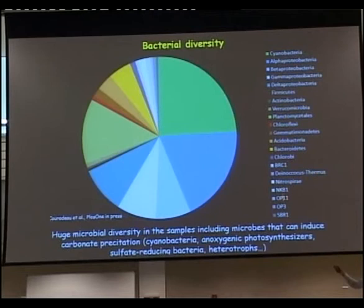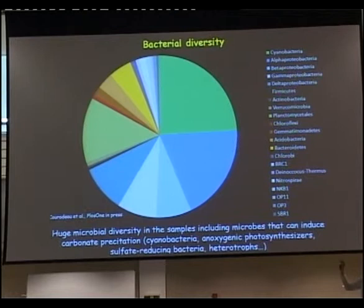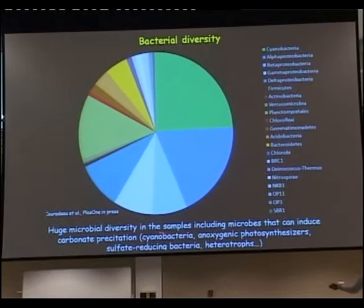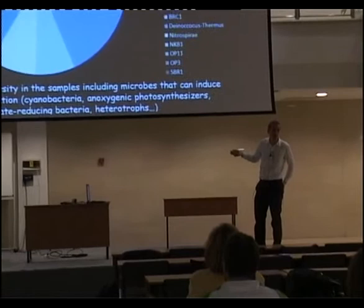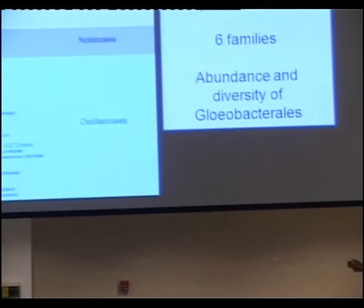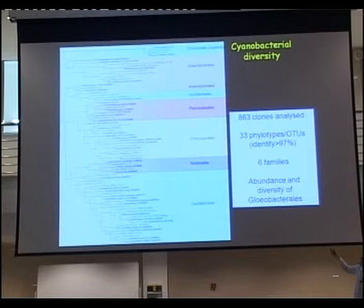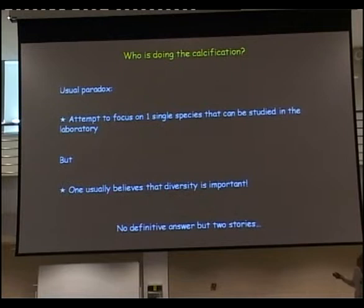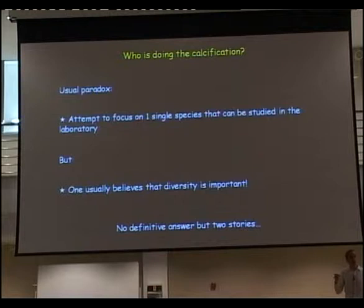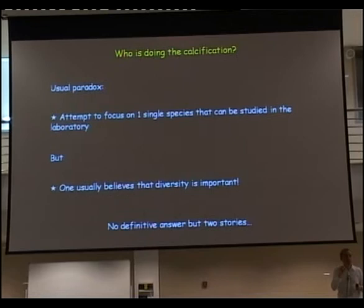These are different groups of bacteria — if you are not a microbiologist this may not mean much, but there are many groups represented and everything can be found in these stromatolites. There is a huge diversity, and among this diversity you have many groups that can induce precipitation of calcium carbonate. Even for the cyanobacteria, there are many different species — six families and 33 distinct types. So there is a very huge diversity. The question, of course, is how do you know who is doing the carbonate precipitation in all that diversity?